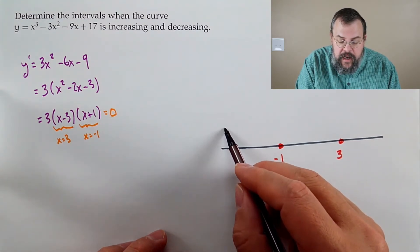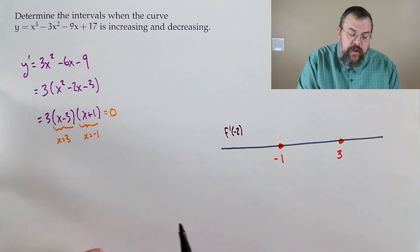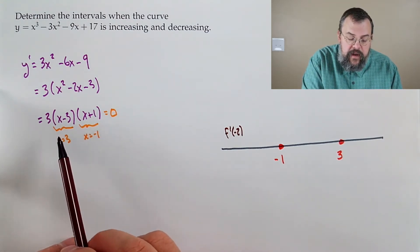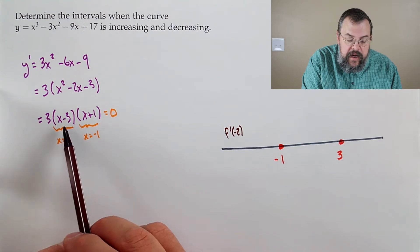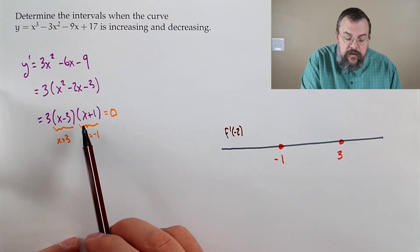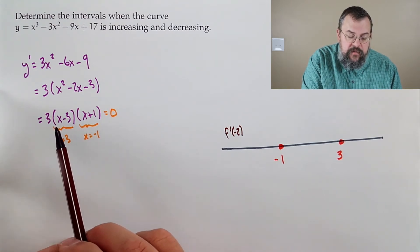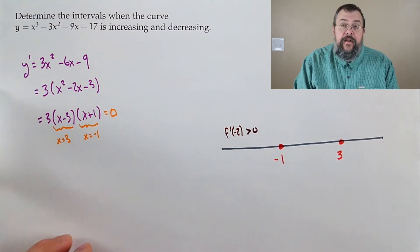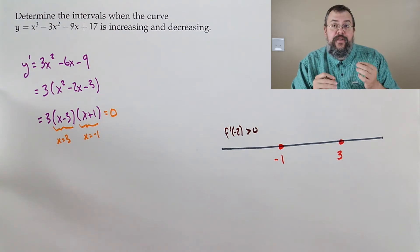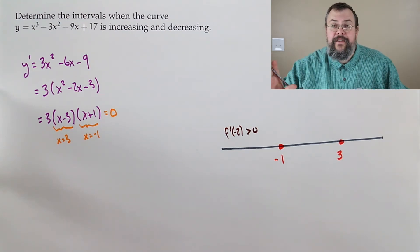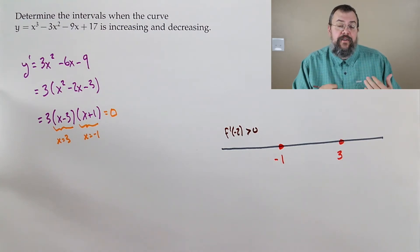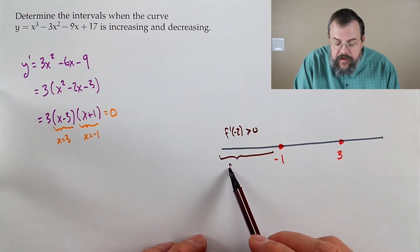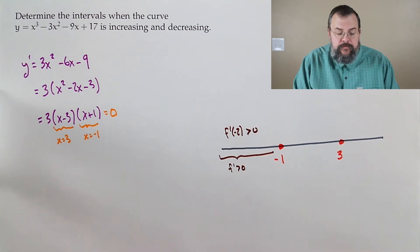Let's plug in negative 2. You can plug it into any form — I like the factored form. Negative 2 minus 3 is negative; negative 2 plus 1 is also negative. So we have positive, negative, negative — multiply all together and we get a positive. This tells us not just at negative 2 but at all points in that interval, our derivative is positive.